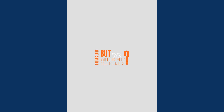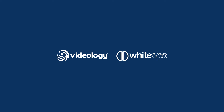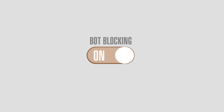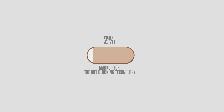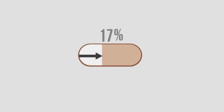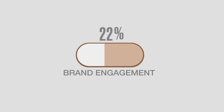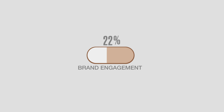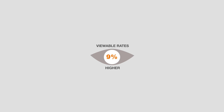But will I really see results? Videology and White Ops conducted a case study to show how powerful ad fraud prevention can be. They compared brand survey results on the same inventory, with bot blocking on and with bot blocking off. The client only paid a 2% markup to block the non-human traffic. They found that inventory with bot blocking technology had brand engagement rates 22% higher than the same inventory without bot blocking. Additionally, viewable rates were over 9% higher.